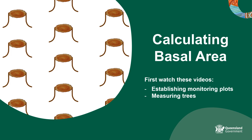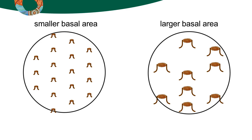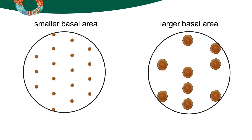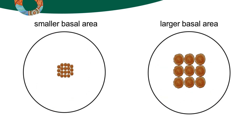Basal area is a measure of stand density that takes the size of each tree into account, as well as the number of trees. It indicates how much of the growing space in a defined area is being utilised and is often well correlated with stand stem volume.